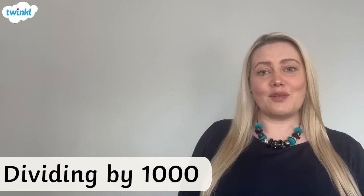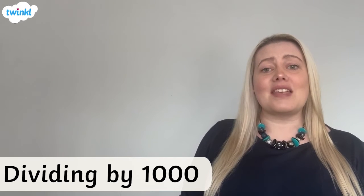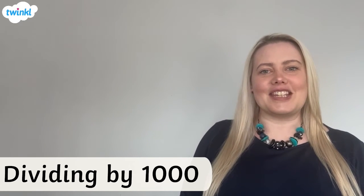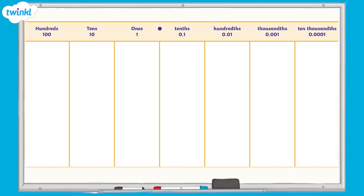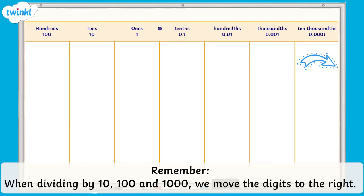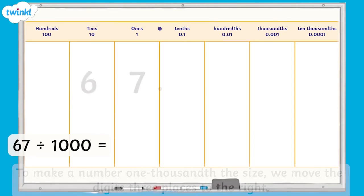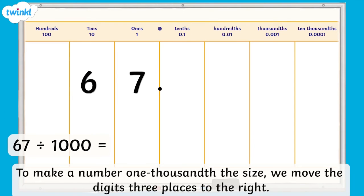Hi. This video is here to help you with dividing numbers by 1,000. Dividing numbers by 1,000 makes them 1,000th the size. Let's take a look at an example calculation. We can use a place value chart to help us divide by 1,000. The value of each place value column is ten times smaller than the column to its left. As a number moves one place value column to the right across the place value chart, each digit becomes ten times smaller, or a tenth of the value that it was. Making a number 1,000th of the size is the equivalent of dividing by ten three times, so the number moves three places to the right.